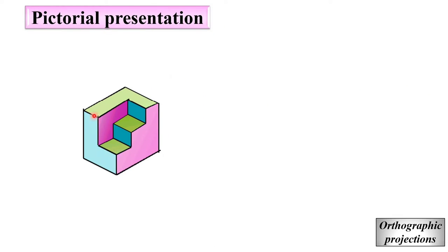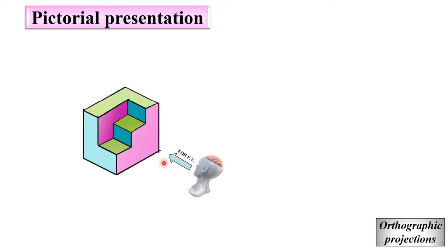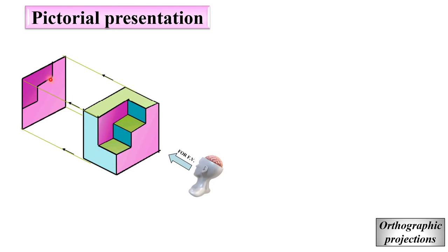Now it is for practice. This is actually the pictorial presentation — a 3D object. Just imagine: if you see from here, that is called as the front view. Can you imagine what you can see from this side? Pink color is what you can see from this side. So, here you can see this is actually the front view.